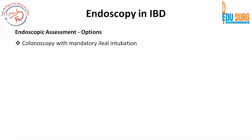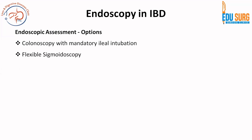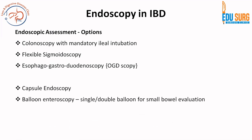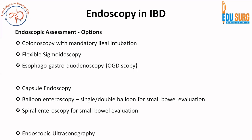Coming to endoscopic assessment: colonoscopy with ileal intubation is the preferred endoscopic approach for ulcerative colitis. Flexible sigmoidoscopy is an option. In Crohn's disease, you may need upper GI endoscopy; options also include capsule endoscopy or balloon endoscopy for small bowel evaluation. Spiral endoscopy is not routinely done. These days, capsule endoscopy is used more commonly where there is no suspicion of obstruction. For other cases, CT or MR enterography is used, and you also have endoscopic ultrasound.